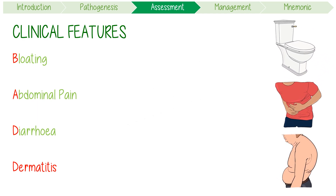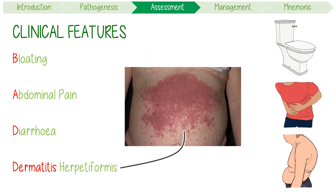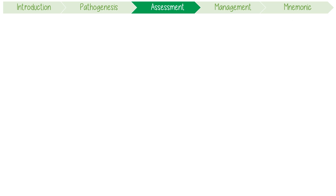Dermatitis refers to dermatitis herpetiformis. This is a rash over the extensor surfaces of the arms and legs, trunk, or buttocks, which is intensely pruritic. These papulo-vesicular lesions are pathognomonic of the disease.